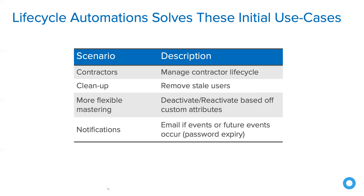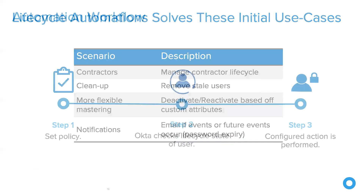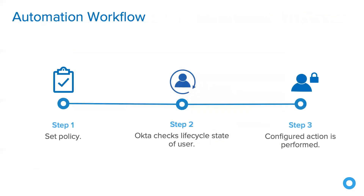The automations workflow looks a little something like this. Step one, you set the policy. Step two, Okta will then check the lifecycle state of the user. And then, step three, the action is performed.